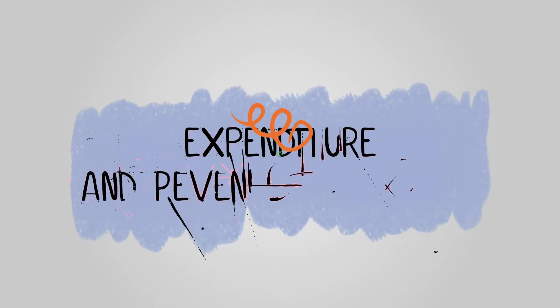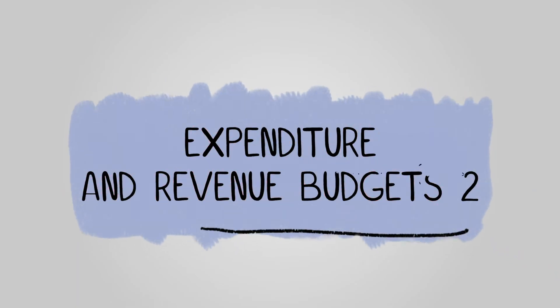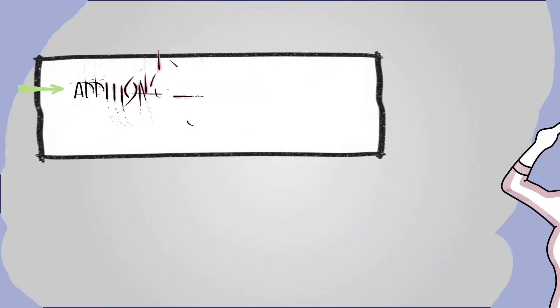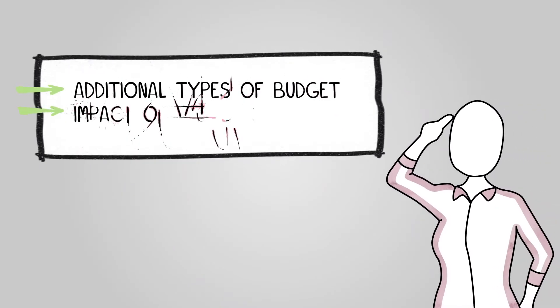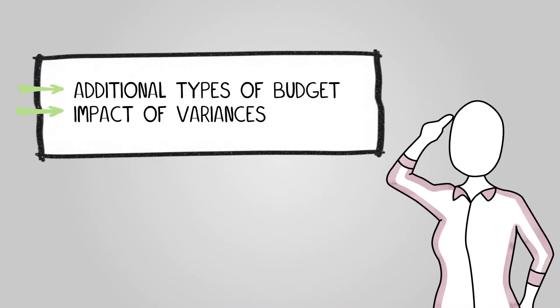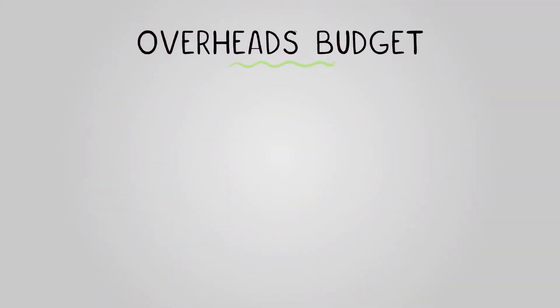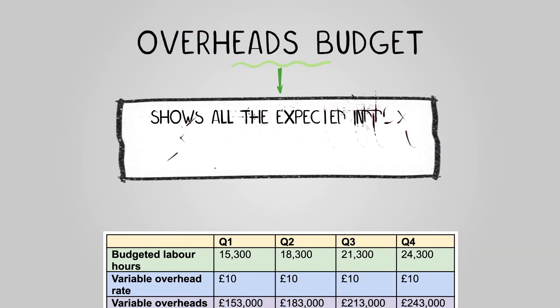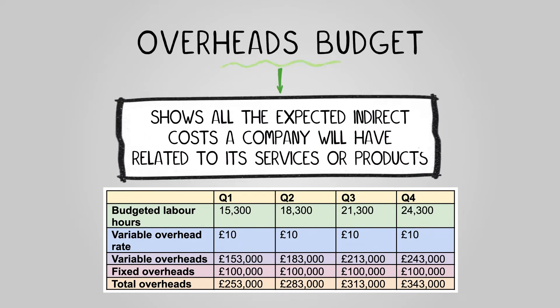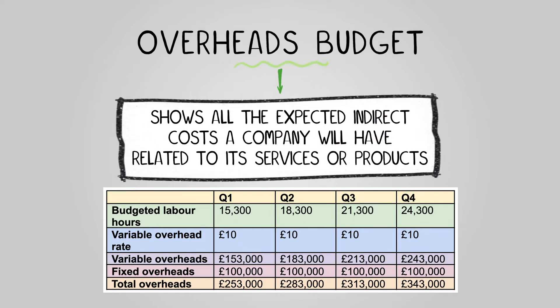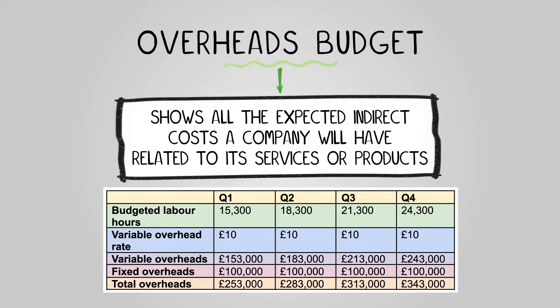Welcome to our second lesson on expenditure and revenue budgets. Here we'll learn about several additional types of budget as well as the impact of variances. Let's dive in. Let's start with the overheads budget. An overheads budget shows all the expected indirect costs a company will have related to its services or products. As this is concerned with indirect costs,